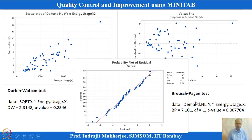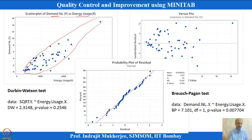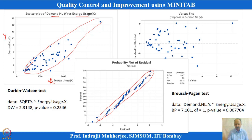This example has two variables — demand and energy usage, where y is demand and x is energy usage. The scatter plot shows there is a linear relationship between x and y. The normal probability plot also shows there may not be any problem, and the Anderson-Darling test confirms no problem. However, when we look at residual versus fitted values, we see a sudden increase in variability as we move ahead.